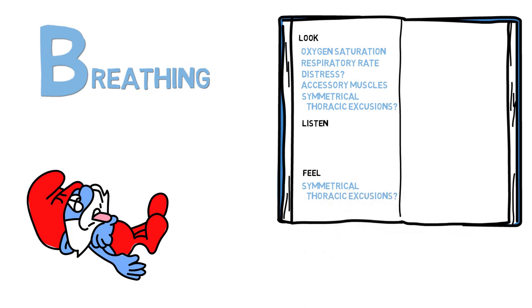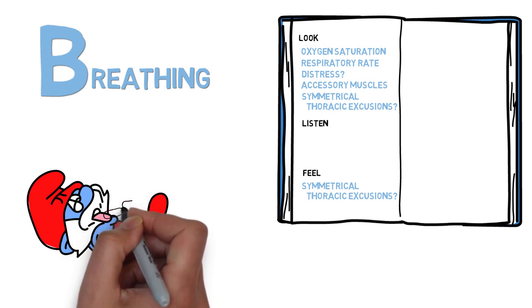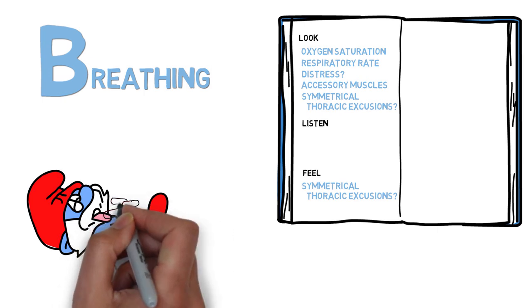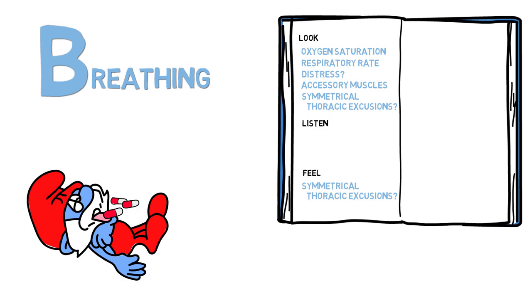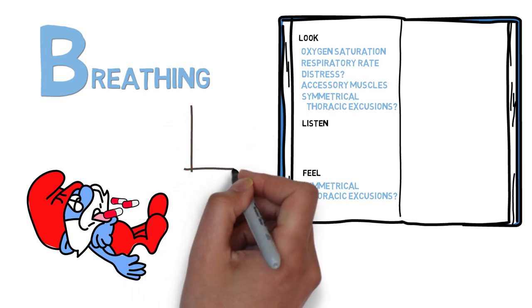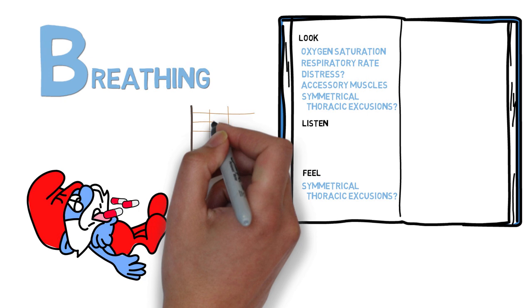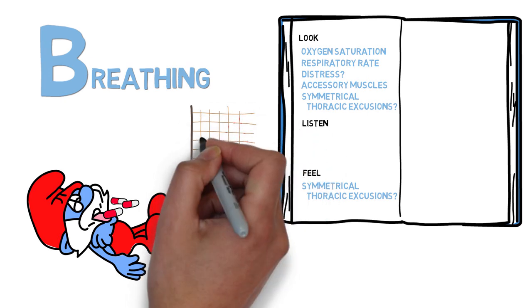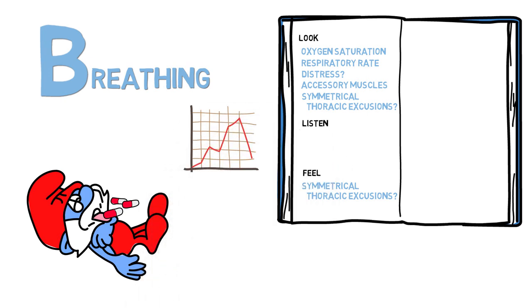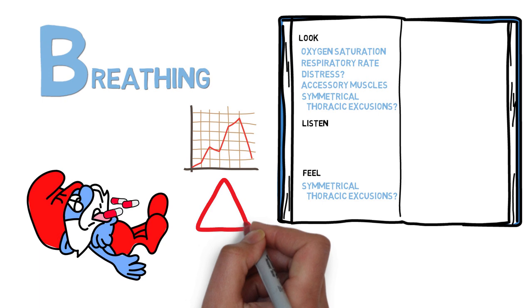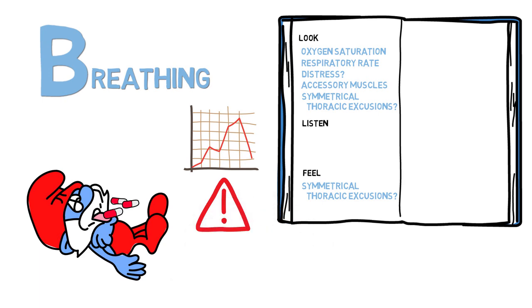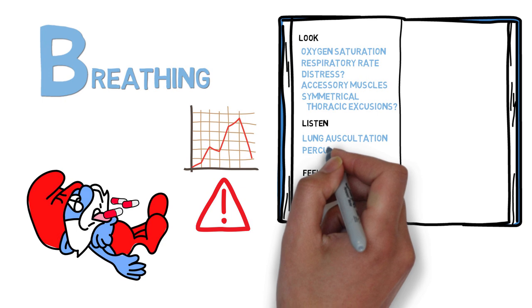The unresponsive patient may have a decreased respiratory rate. If so, think opioid overdose. Also remember that increased respiratory work is friggin' exhausting. So if the respiratory rate decreases after being increased, beware. It might be that the patient isn't able to keep up with the demand. Auscultate the lungs and use percussion to check for pneumothorax or fluids.